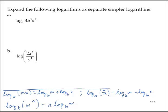Let's look at exercise A. We're asked to expand the logarithm into separate simpler logarithms. We're given the log base 7 of 4a to the third b to the second. Notice that really says 4 times a to the third times b to the second. So I can expand this as the log base 7 of 4 plus the log base 7 of a to the third plus the log base 7 of b to the second.